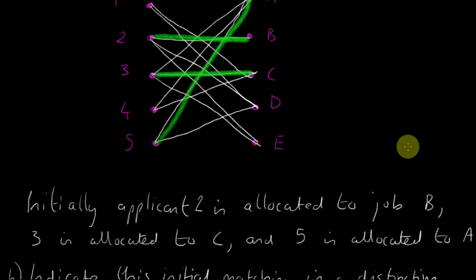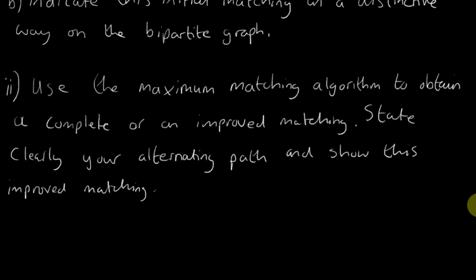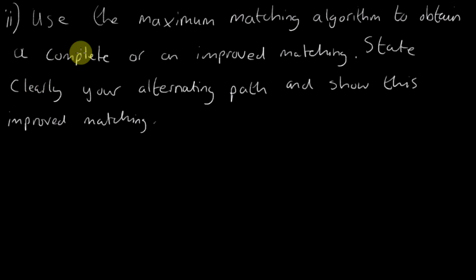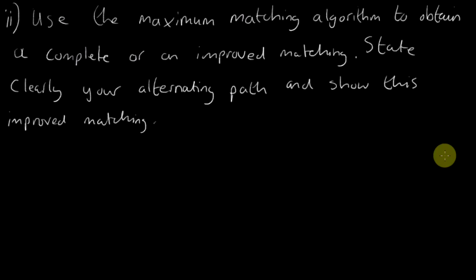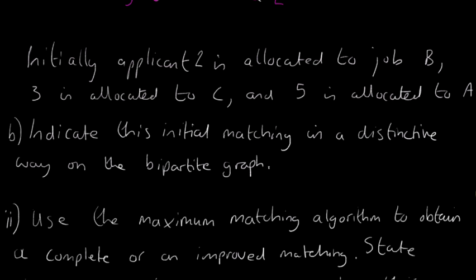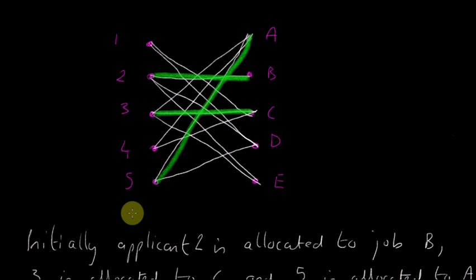We're ready for the big climb to the top of the mountain. This is the final question, and it kind of asks for two or three different things. It says: use the maximum matching algorithm to obtain a complete or improved matching, state clearly your alternating path and show this improved matching. We're going to be introducing some terminology here which I'll hopefully explain clearly.